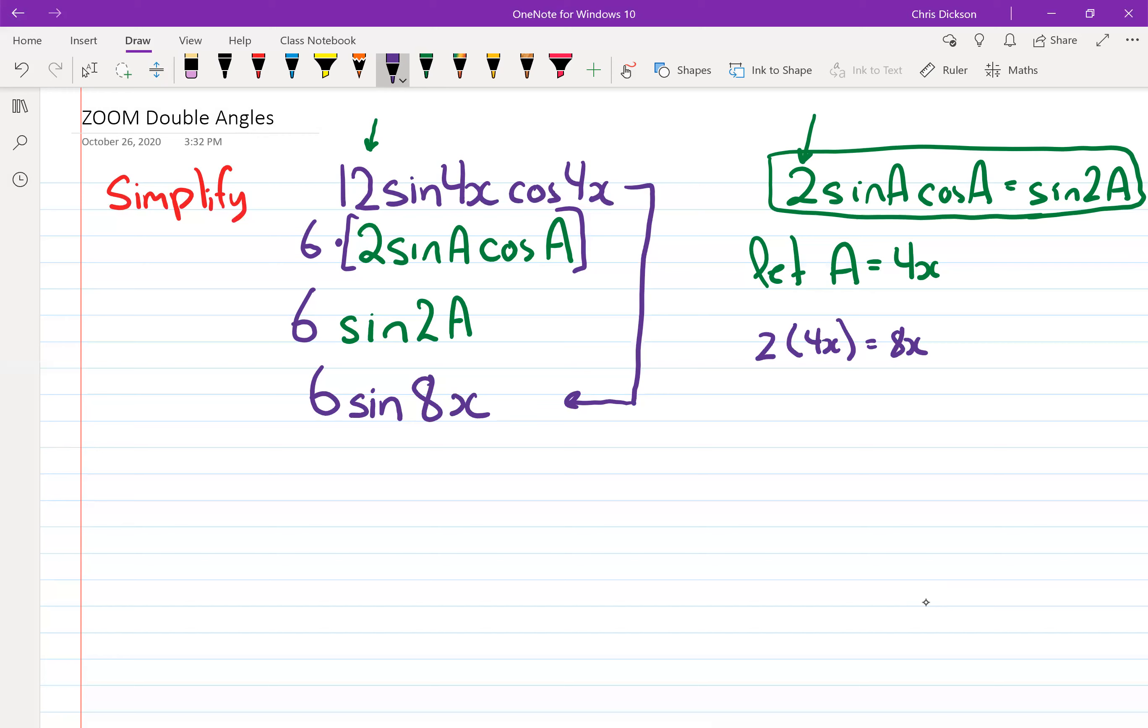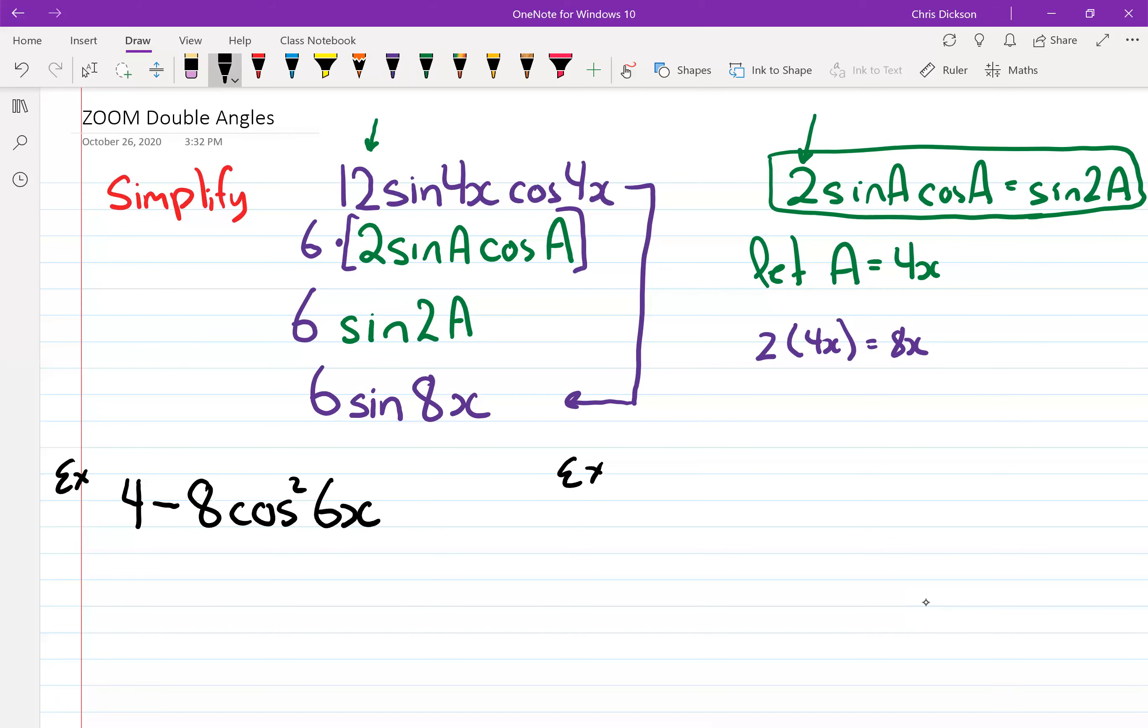So I'm going to give you two more questions and then I'd ask you to maybe pause the video and see if you can solve them on your own. If you can, great, maybe check afterwards. But if you can't, then obviously watch the rest of the video here. So let's take 4 minus 8 cos squared 6x, that's one question example, and the second question we're going to say is 4 tan 3x all over 1 minus tan squared 3x. So pause the video here and see if you can simplify these.